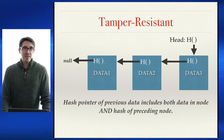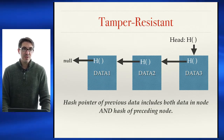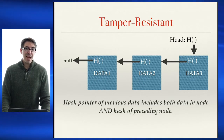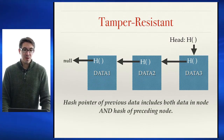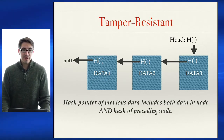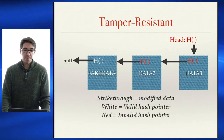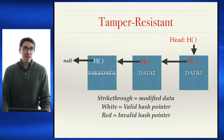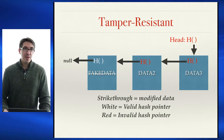So why is this tamper resistant? The hash pointer takes the hash of all the data in the previous node that it points to. This also includes the hash of that previous node. So the first node contains both the hash of null as well as data 1, and the second node contains both the hash of data 1 as well as data 2. If at any point we try to modify data, this will be propagated all the way up to the head of the linked list. On this slide I've shown strikethrough fake data — somebody tried to modify this first block in the blockchain.